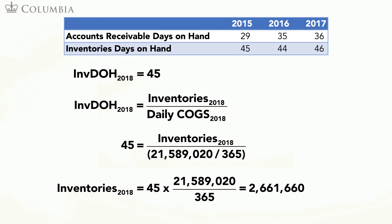Using the definition of inventory days on hand, we can solve for inventories. Note that we need daily COGS in 2018. Luckily for us, we estimated COGS in 2018 when we were computing the net operating profit. Solving for inventories leads to inventories of 2,661,660.